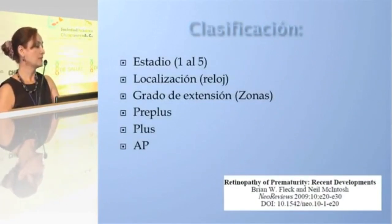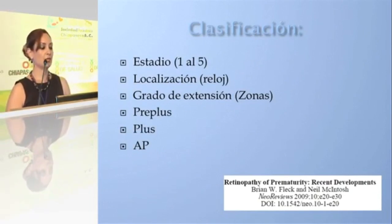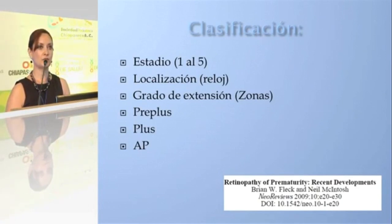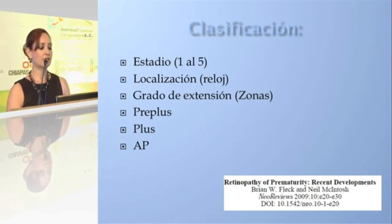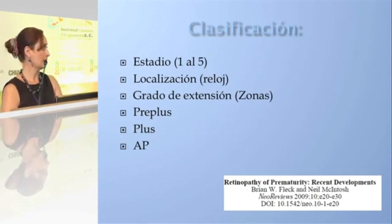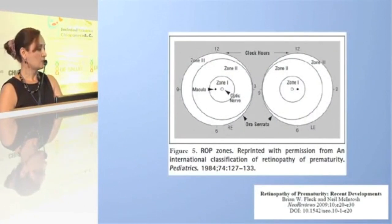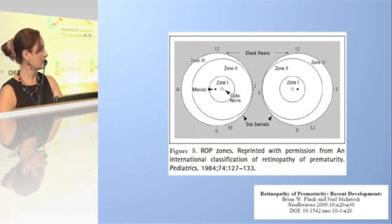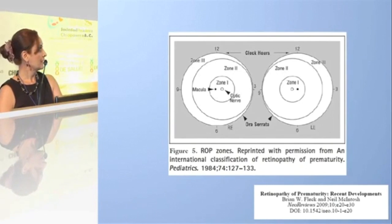This classification is made by a trained ophthalmologist who stages the disease. It is described in five stages; localization is based on clock hours, the degree of extension is based on the three described zones, plus disease, pre-plus disease, and aggressive posterior disease — previously also described as threshold or pre-threshold disease. Zone 1 covers the center, zone 2 extends to the ora serrata in the nasal region, and zone 3 is the most peripheral, with localization based on clock hours.